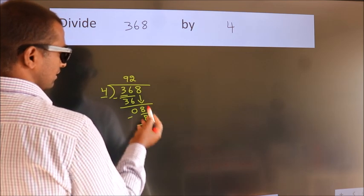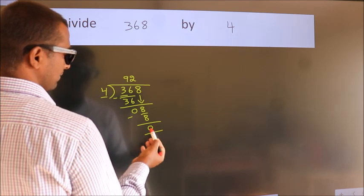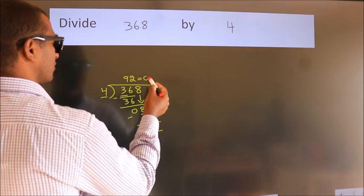After this, no more numbers to bring down, and we got remainder 0. So this is our quotient.